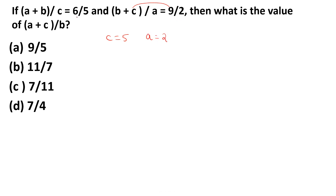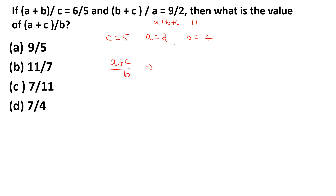When a = 2, c = 5, then a+b+c = 11, so b = 11−2−5 = 4. Therefore (a+c)/b = (2+5)/4 = 7/4. The answer is option D: 7/4.